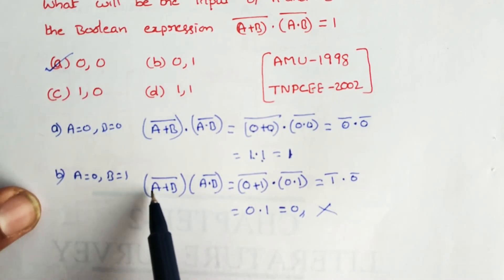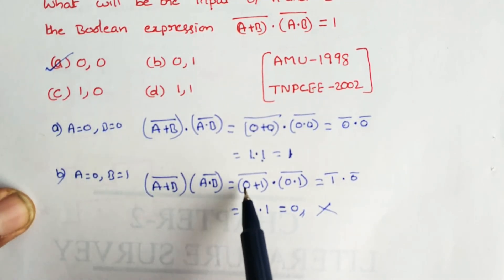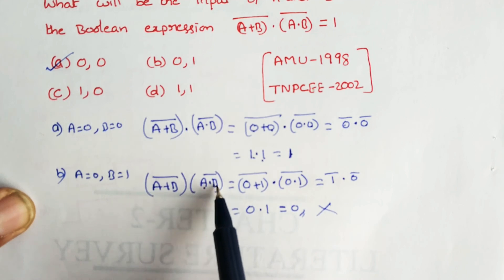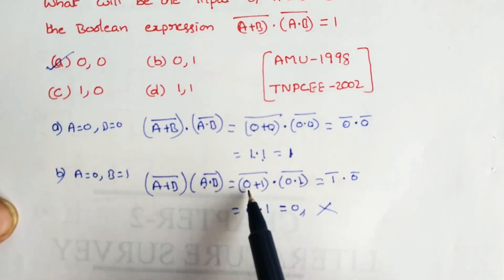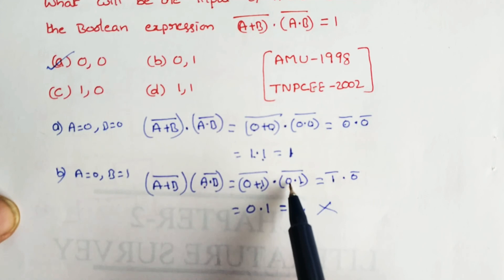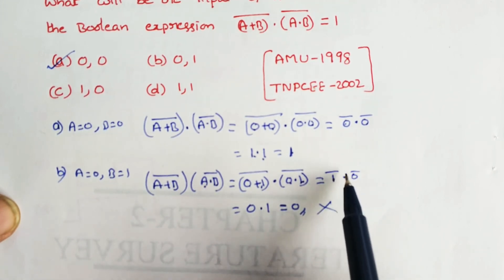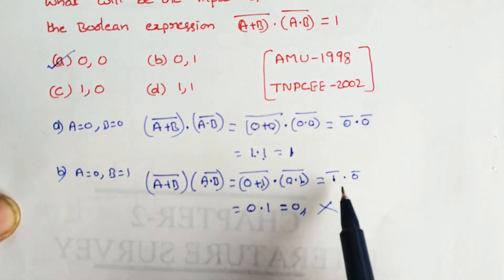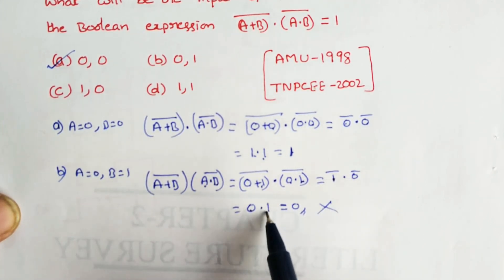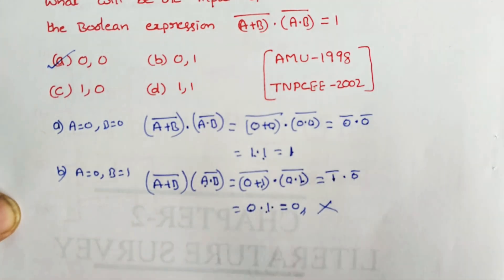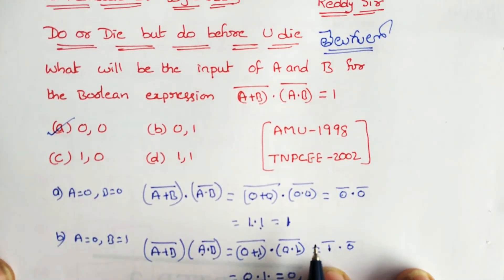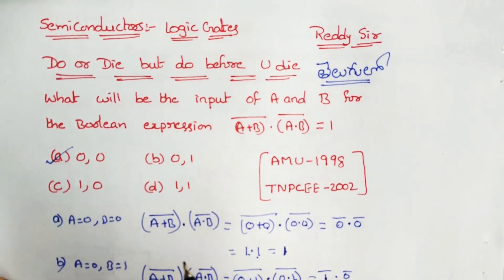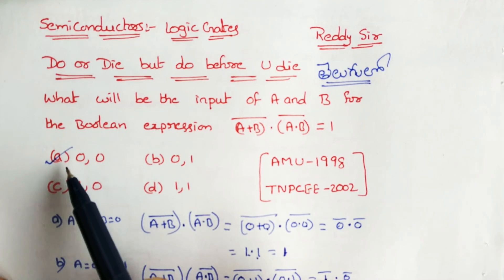With A=0 and B=1: 0 plus 1, whole bar is equal to 1. 0 plus 1 is equal to 1, so 1 bar is equal to 0. Then 0 into 1 is equal to 0. The option value is equal to 0, so this option is correct.